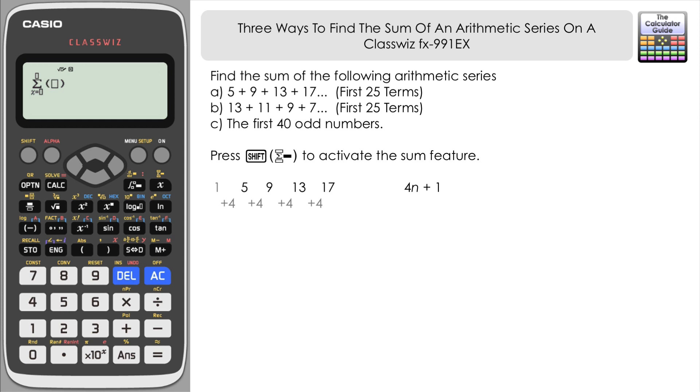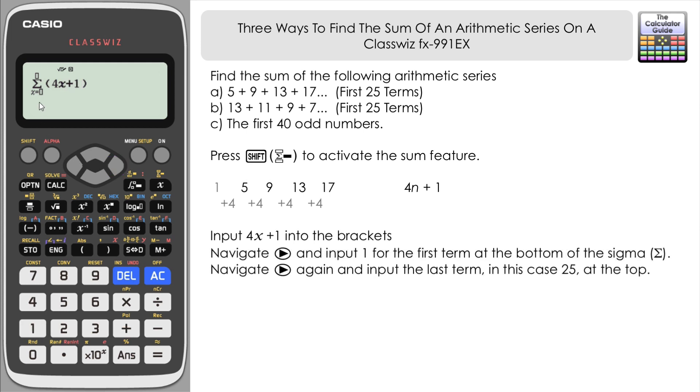For this particular series, we write 4x + 1. Then navigate right and the cursor will move to the sigma notation. Where it says x equals at the bottom, we input 1 for the first term. Then navigate right to go to the top.